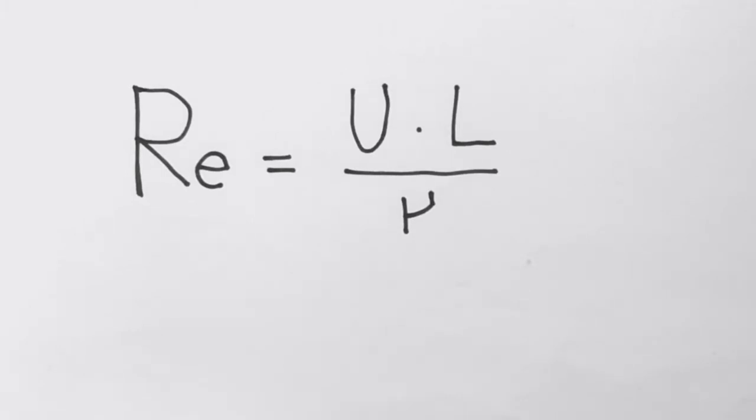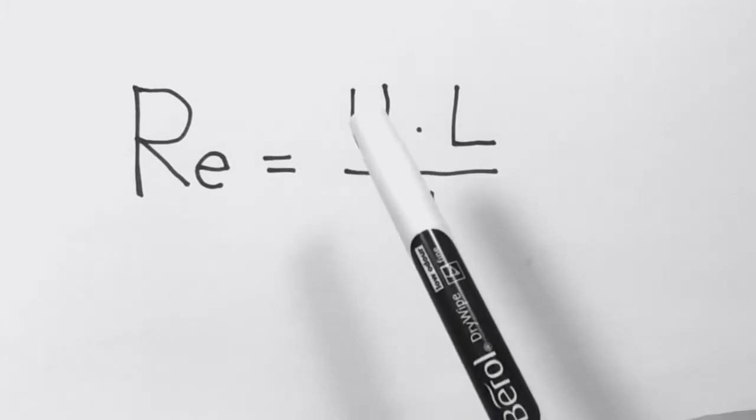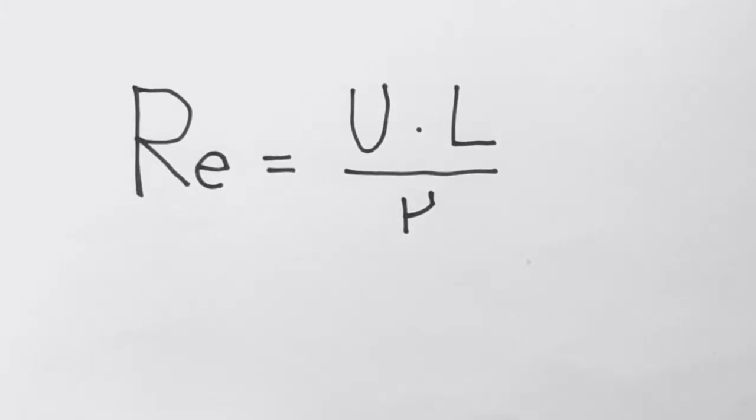Welcome to the channel today. We talk about the Reynolds number. In fluid mechanics, there's a fundamental non-dimensional number defined as the ratio between u times l and the kinematic viscosity ν of the fluid. So u is a characteristic velocity and l is a characteristic length of the system.